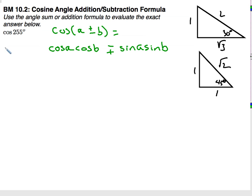So I can actually rewrite cosine of 255 as the cosine of 300 minus 45. Now the reason why I am using 300 is that is a special angle, reference angle, since the full rotation is 360.